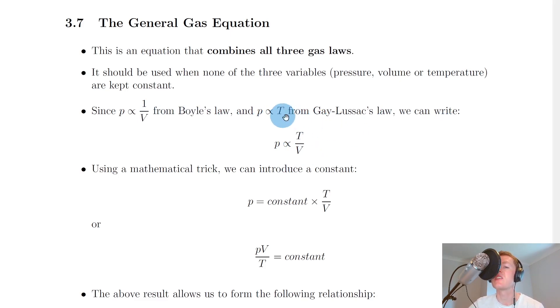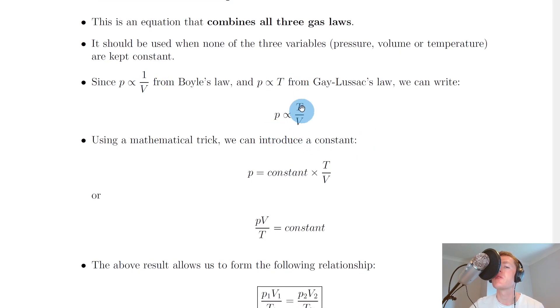then we can combine these two things together to write pressure is directly proportional to temperature over volume. And that's just like saying the T is replacing the numerator on the top here. So we have P is proportional to T over V, or in other words pressure is directly proportional to the temperature divided by volume.